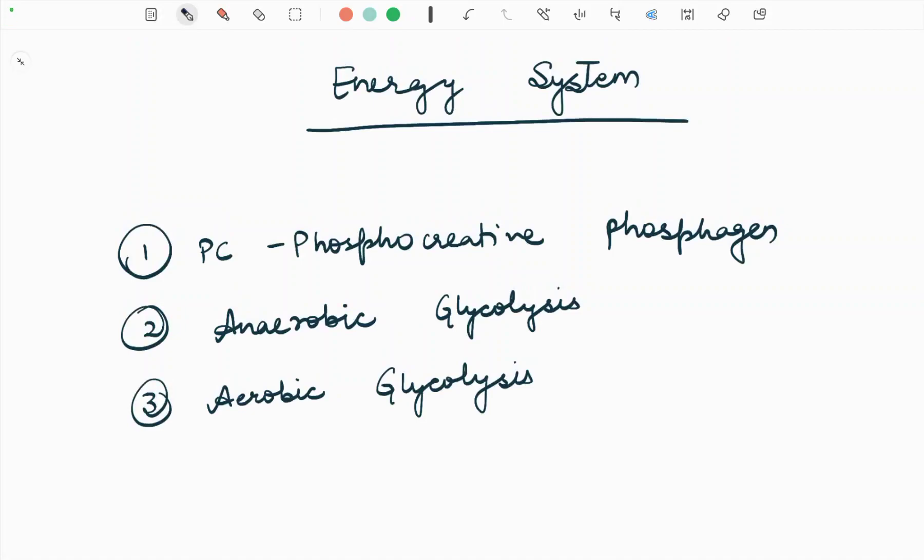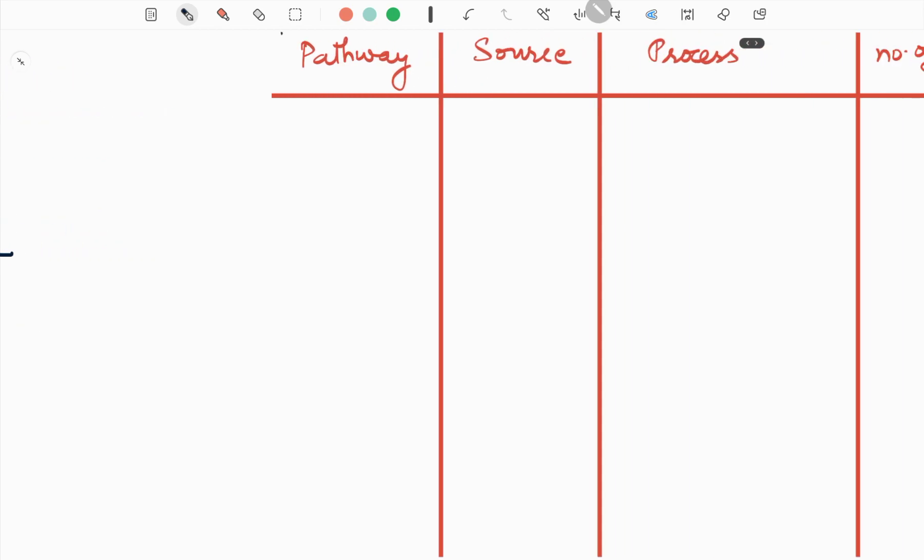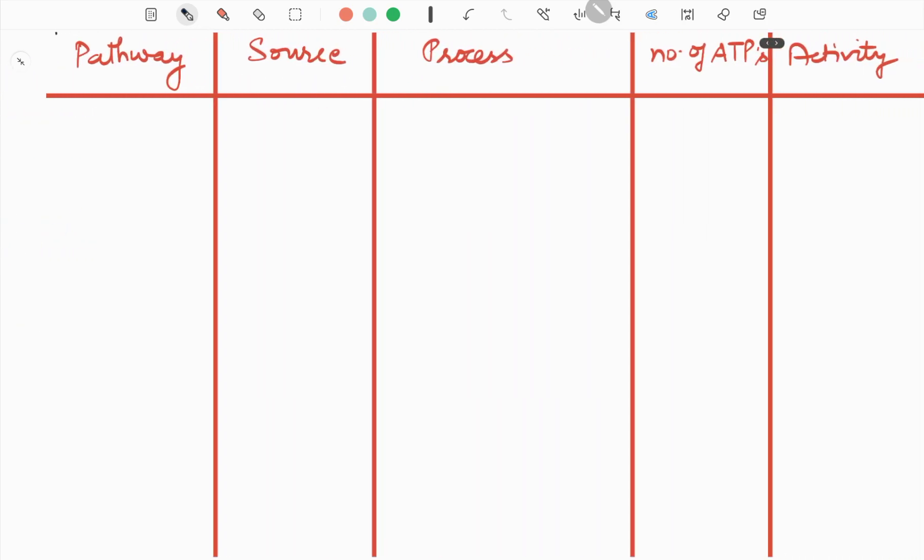Everyone, welcome to Camp Bio Classes. So today we will discuss energy systems: number one, PC (phosphocreatine phosphagen); number two, anaerobic glycolysis; and number three, aerobic glycolysis.